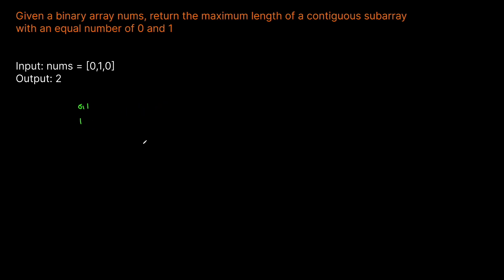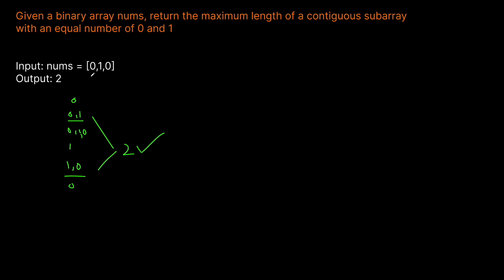So how might we solve this problem? We could do it in a naive manner — basically building all the possible contiguous subarrays: zero, zero-one, zero-one-zero, one, zero-one-zero, and then zero. The only ones that have an equal amount are the two we saw earlier, both with length two. But doing this is not going to pass your interview, because this is a very inefficient solution — you basically have to build all possible combinations, which is a ridiculously expensive time complexity.